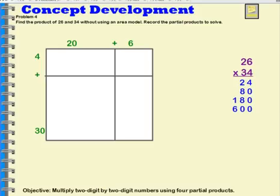Now I just have to add this stuff up. 4 plus 0 plus 0 plus 0 is 4. 8 plus 8 is 16. And then 6 plus 1 plus 1 is 8. So the product of 26 times 34 is 884.